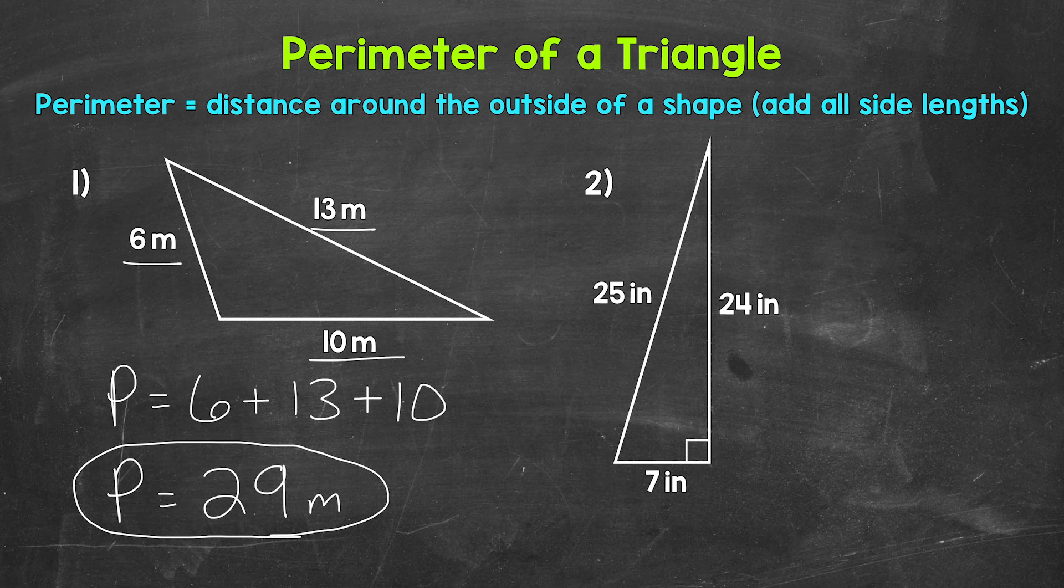That means that the distance around the outside of that triangle is 29 meters. Let's move on to number 2, where we have a right triangle with side lengths of 25 inches, 24 inches, and 7 inches. So let's add all of these sides.